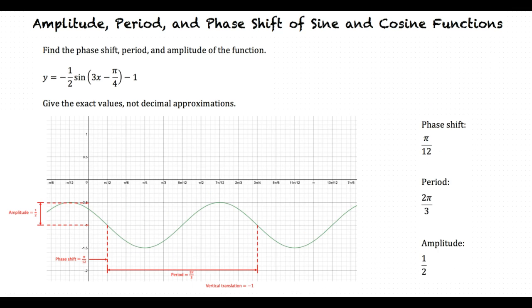In summary, we look at the sine or cosine function in terms of variables a, b, c, and d. Then we substitute the variables into the equations for amplitude, period, and phase shift. Amplitude is the absolute value of a. The period is 2π divided by b. The phase shift is c divided by b. If the phase shift is positive, then the graph shifts to the right and vice versa. Lastly, the vertical translation is d. If d is negative, then the vertical translation is down and vice versa.